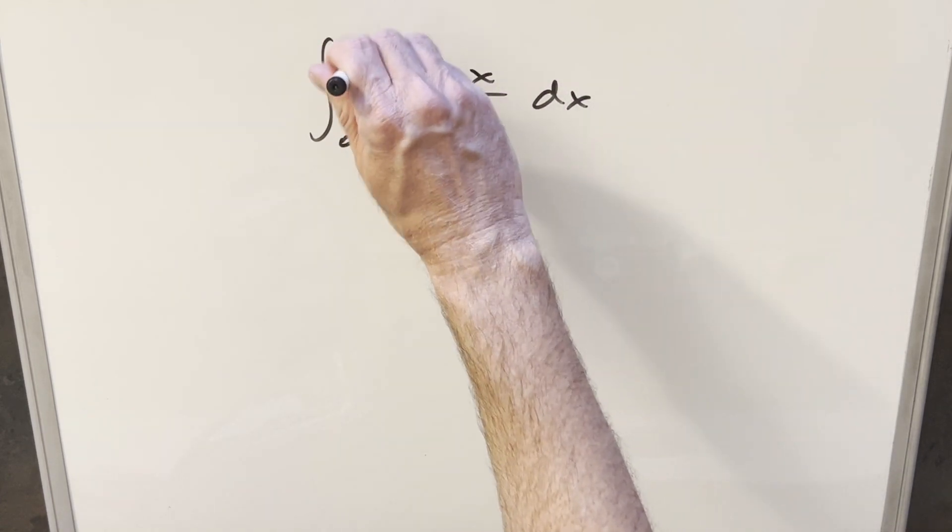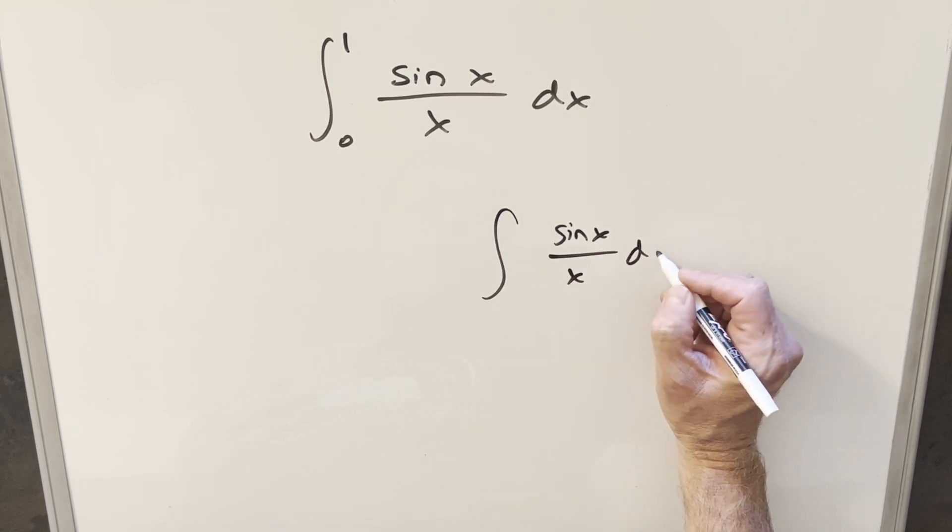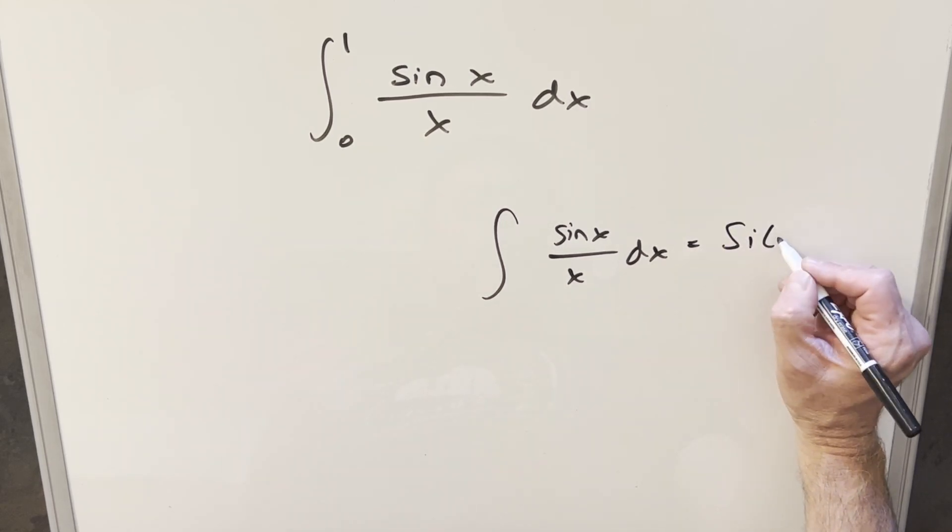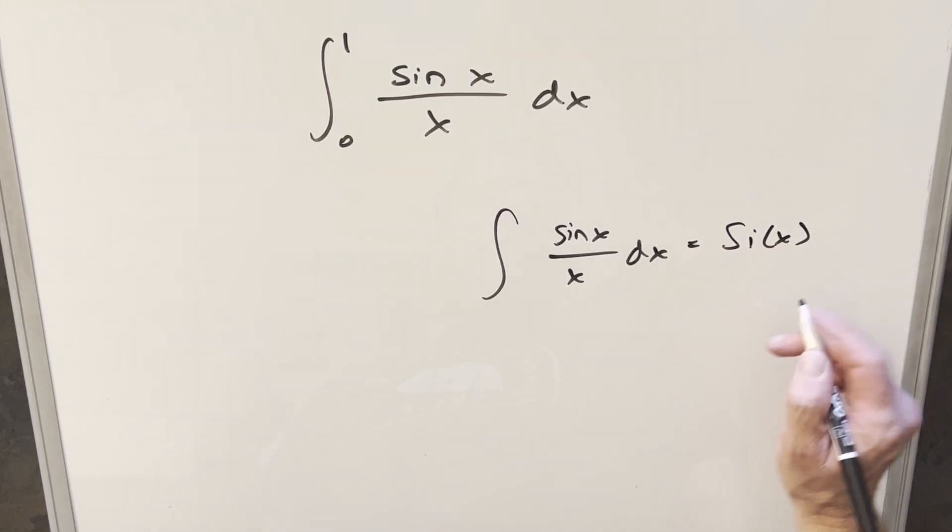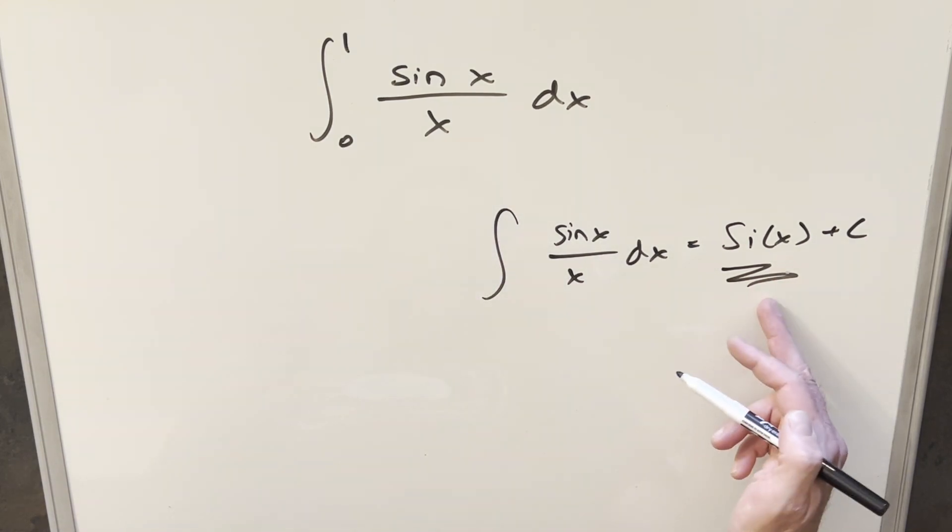But because our upper bound is 1, I don't think we can use any of the techniques we used previously. Now the other thing you might be thinking of is why don't we just calculate the anti-derivative, the indefinite integral of sine x over x dx? The trouble is there's no known value for this in terms of standard functions. We represent the solution with this sine function plus c, but this thing isn't going to help me get a numeric value out of this.